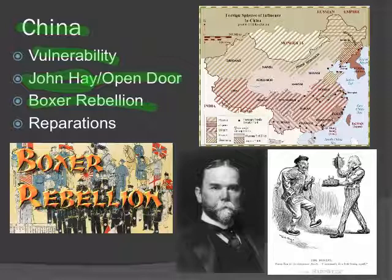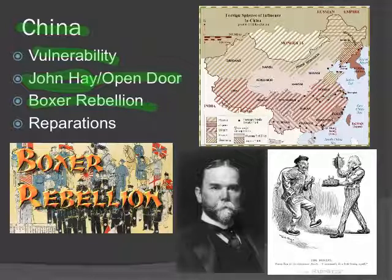The Boxers would get all hopped up on opium and then go into battle. All these countries — the United States included, Russia, Britain, Germany, France — all sent armies to China to put down the Boxer Rebellion. The Boxers, stoned out of their minds on opium, went into battle believing bullets couldn't harm them. They got mowed down by machine guns. This was over very quickly.